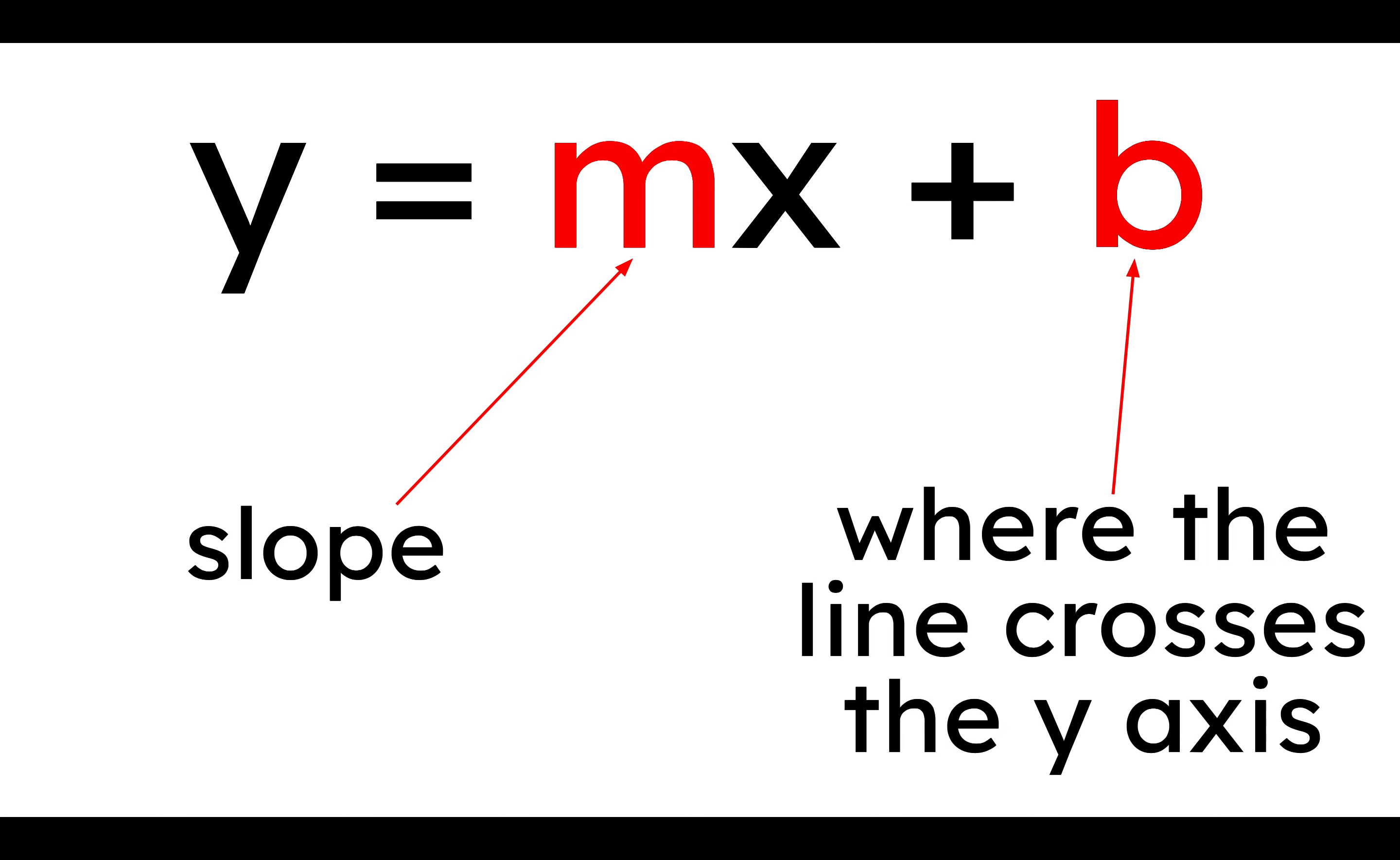So b is where the line crosses the y-axis. The y-axis is the up and down one, the vertical one. And I was curious why slope is m instead of s or something else, and why this is b. And I spent maybe 15 to 30 seconds on Google, and the answer is nobody knows. And all of the guesses are pretty dumb, so I'm not even going to go into it. But we have m is slope, and b is the y-intercept.